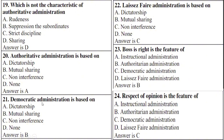Democratic administration is based on — right option is B: mutual sharing. Laissez-faire administration is based on — right option is C: non-interference. Both of these are features of right option A: authoritarian administration.